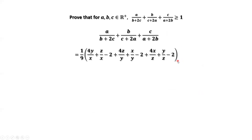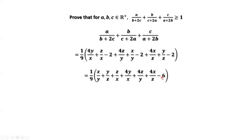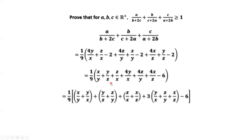We continue to simplify the inside part. The three instances of negative 2 sum to negative 6. Now we pair three groups: X over Y and Y over X; Y over Z and Z over Y; Z over X and X over Z.